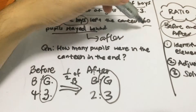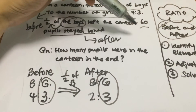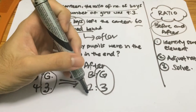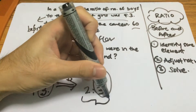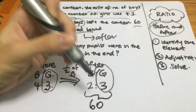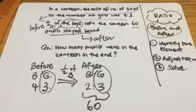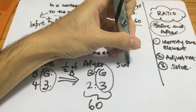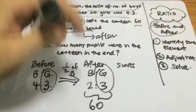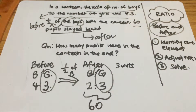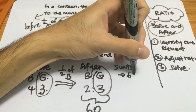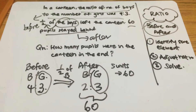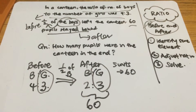After that, 60 pupils stayed behind, so the total is 60. In order to solve this, it's very simple. You take five units — two units of boys and three units of girls — so five units equals 60. The question asks: how many pupils were in the canteen in the end?